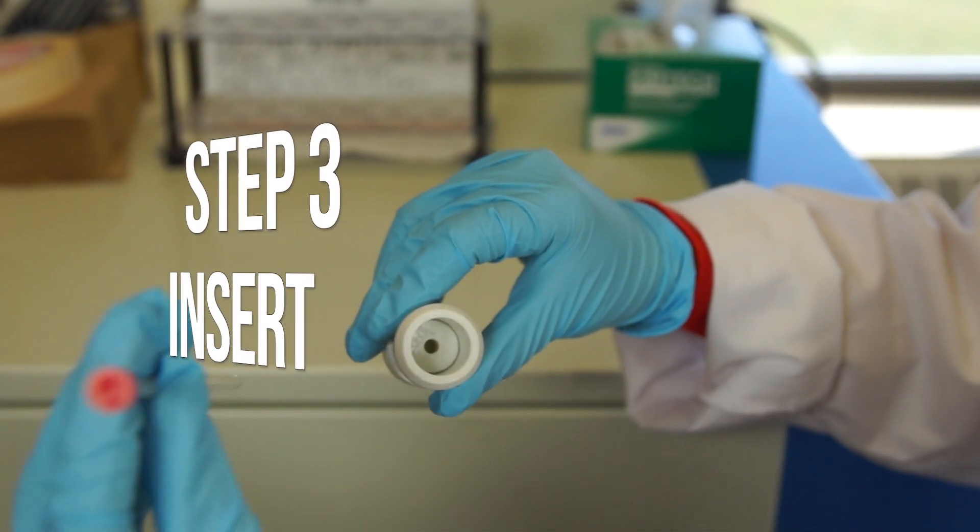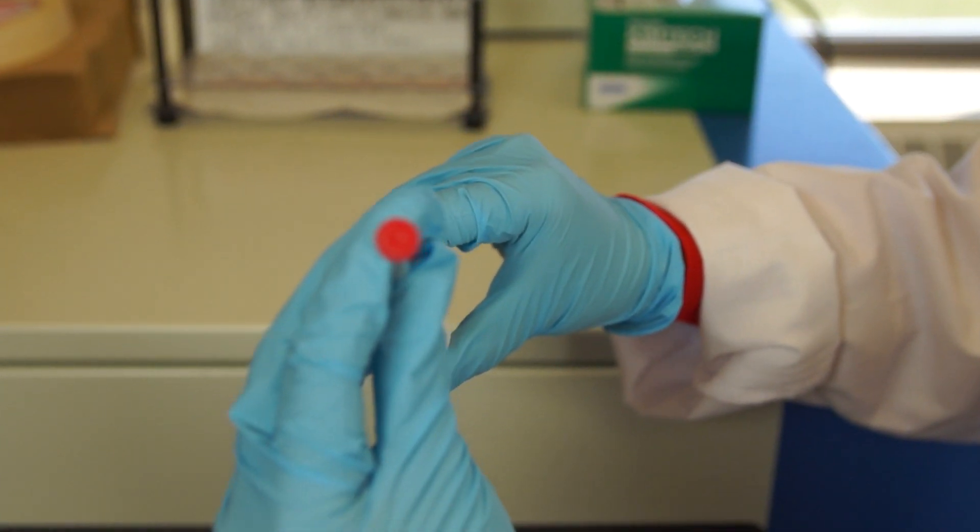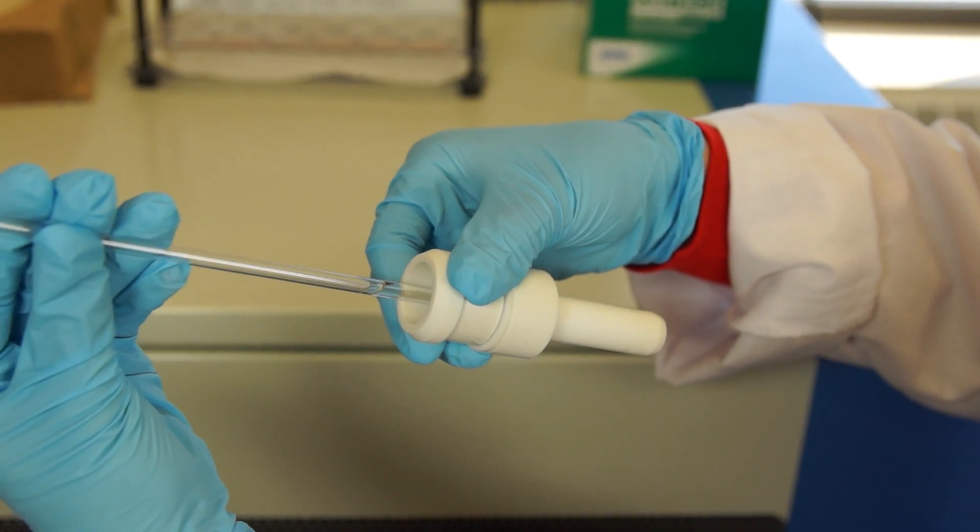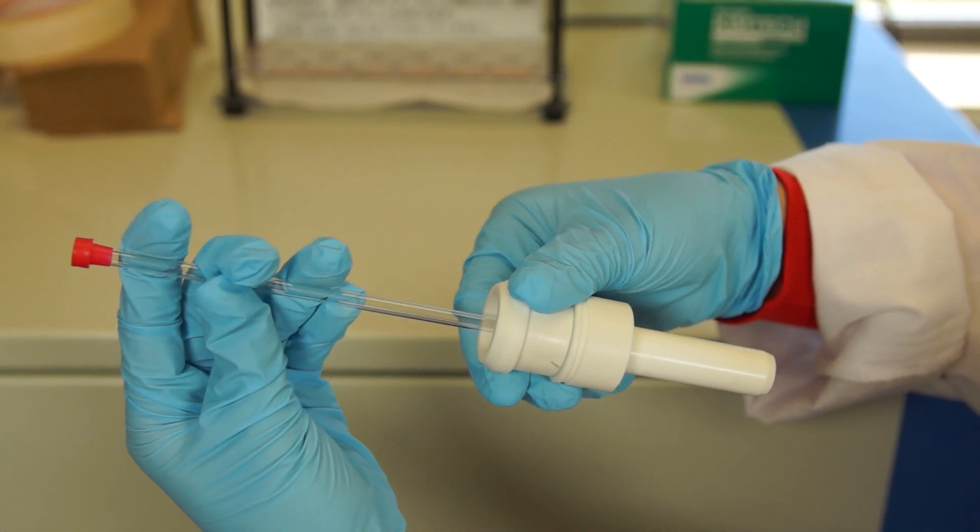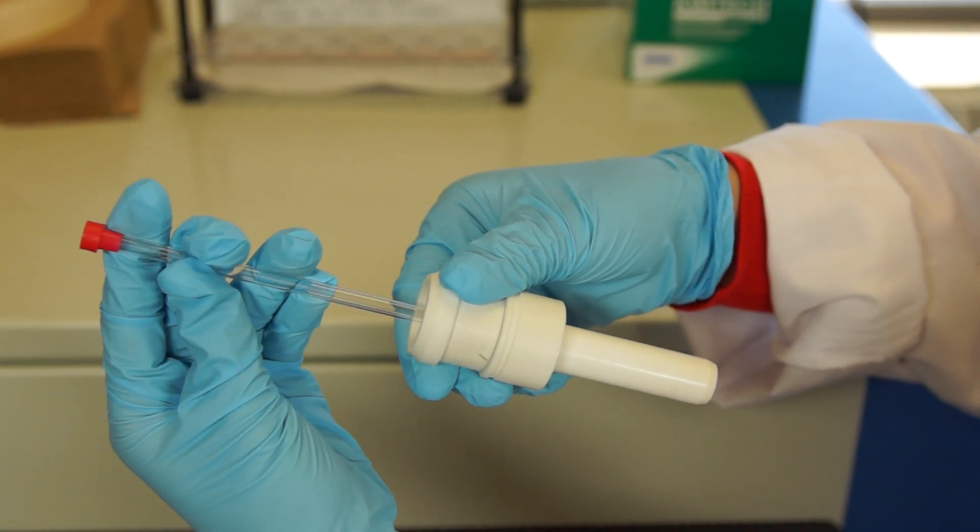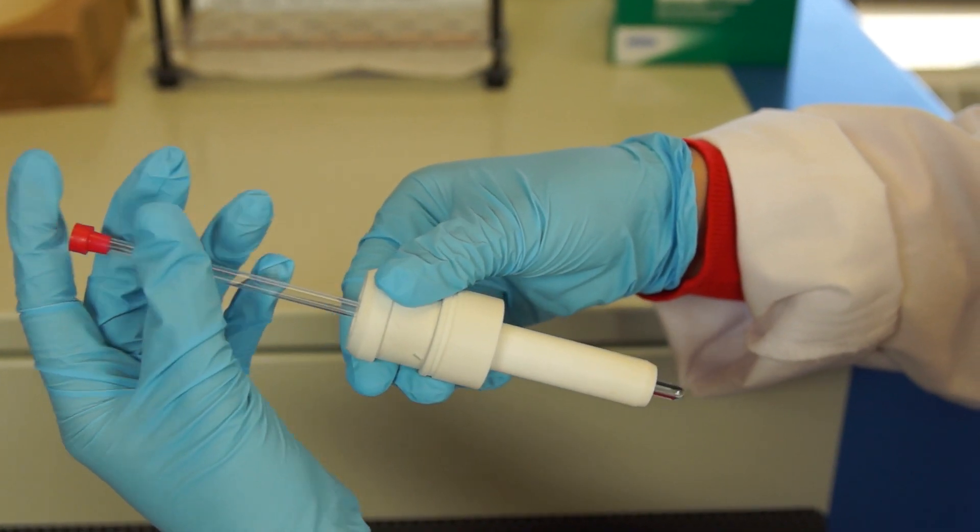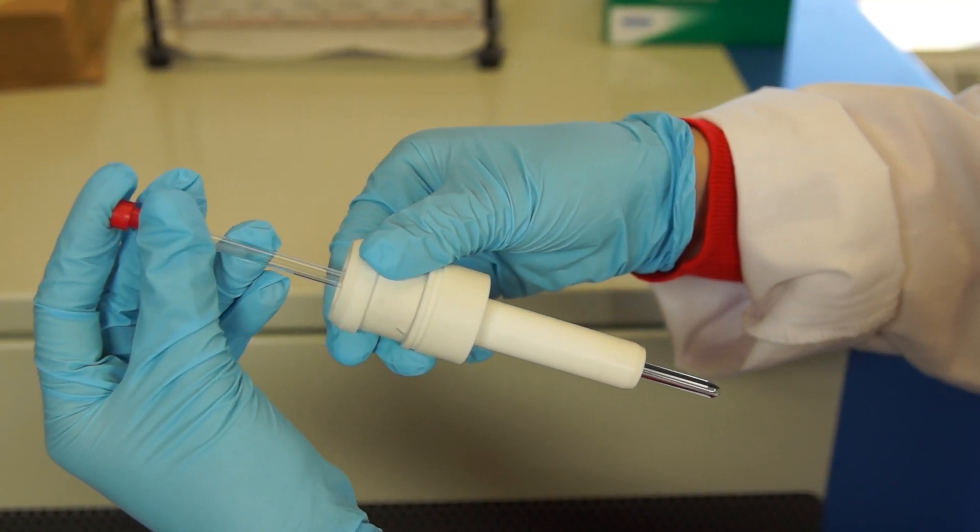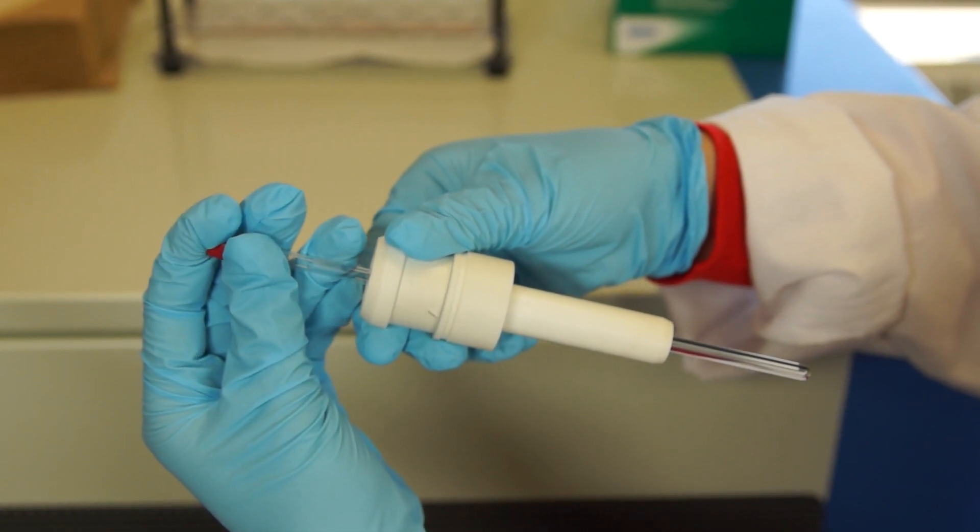Now, carefully insert the NMR tube into the NMR spinner turbine. Do this really gently with a slow twisting motion. You don't want the NMR tube to break during this step. Also, don't push the NMR tube down all the way.